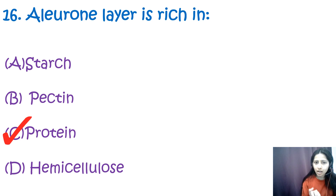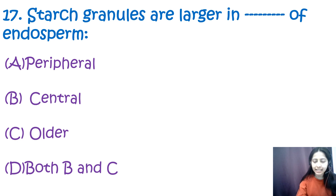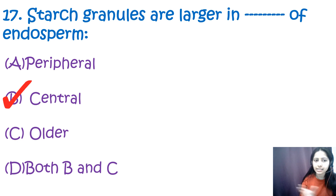Question 17: Starch granules are larger in which part of the endosperm — peripheral, central, older, or both B and C? The correct option is B — central. Starch granules are larger in the central region of the endosperm.